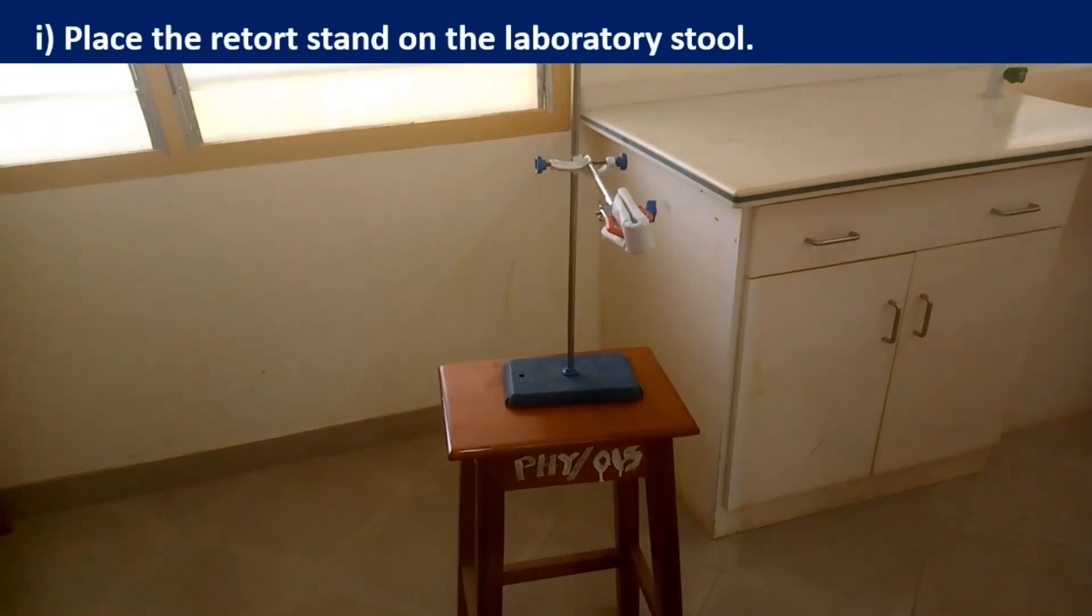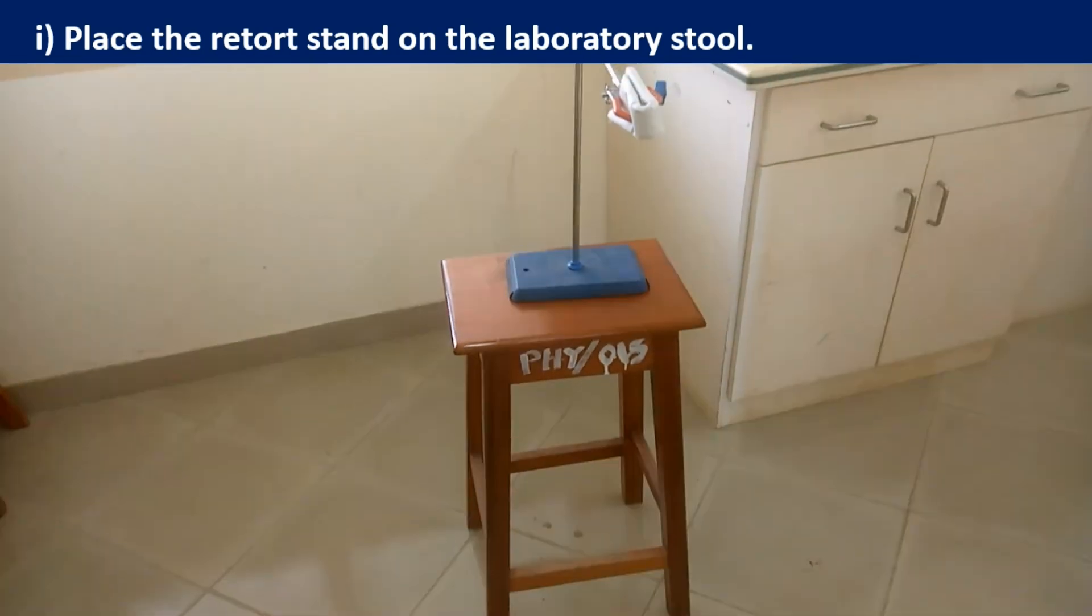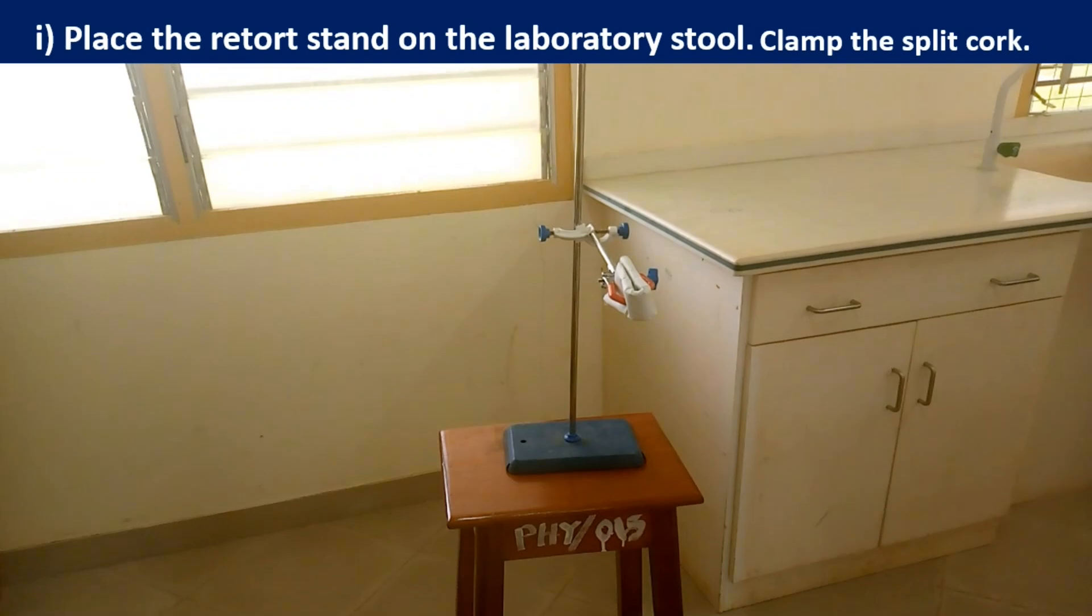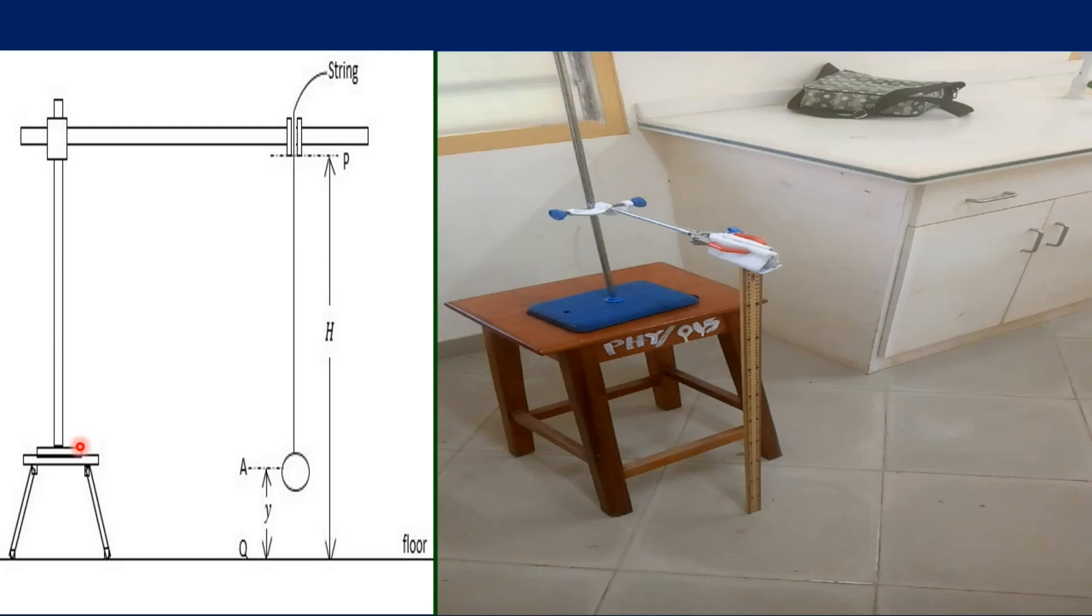The high part of the question says place the retort stand on the laboratory stool and clamp the splitcock. We are to fix the retort stand in such a way that the distance between the splitcock and the floor is 100 cm, which is the full length of the meter rule. And we are going to suspend the pendulum bulb at a certain distance from the floor.